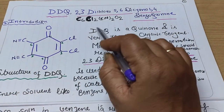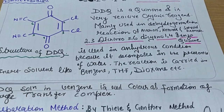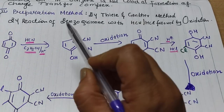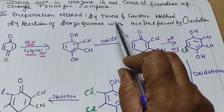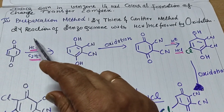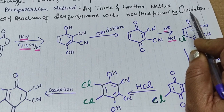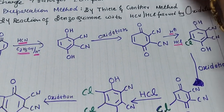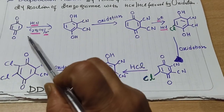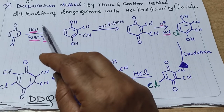Now let us see the preparation method of DDQ. This method is given by the Thiele and Genter method. DDQ can be prepared by the reaction of benzoquinone with SCN or SCl, followed by oxidation. The steps are multiple, so let's go through them carefully.